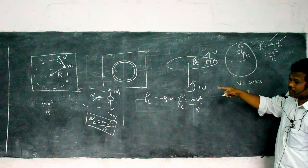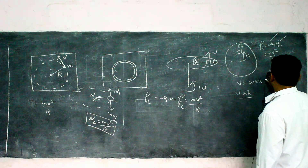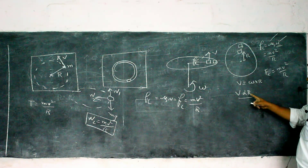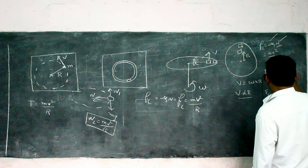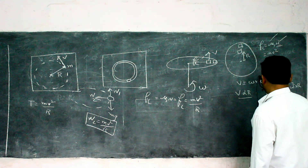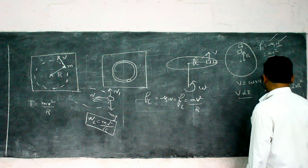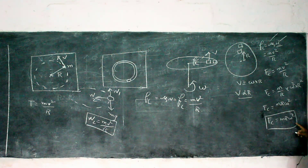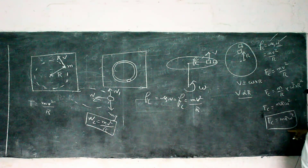If radius increases, linear velocity also increases since V = ωR. Substituting into the centripetal force formula: Fc = MV²/R = M(ωR)²/R = MRω². This is another formula for centripetal force. Centripetal force is directly proportional to radius when mass and angular velocity are constant.